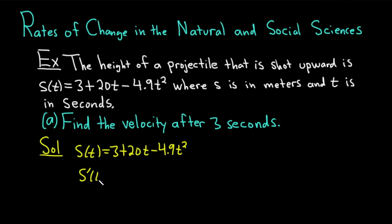So s'(t) is equal to, derivative of 3 is 0 because it's a constant. And then 20t, its derivative is 20 because the derivative of t is 1. With this last piece, we can use the power rule. We can bring down the 2. We get -9.8. We subtract 1 from the t in the exponent. So we get t to the first. And that would be the velocity function.